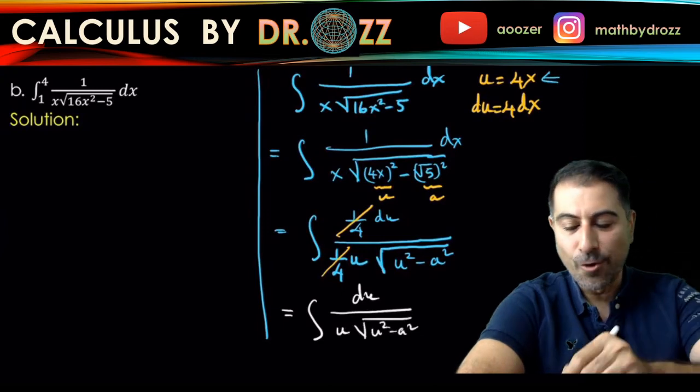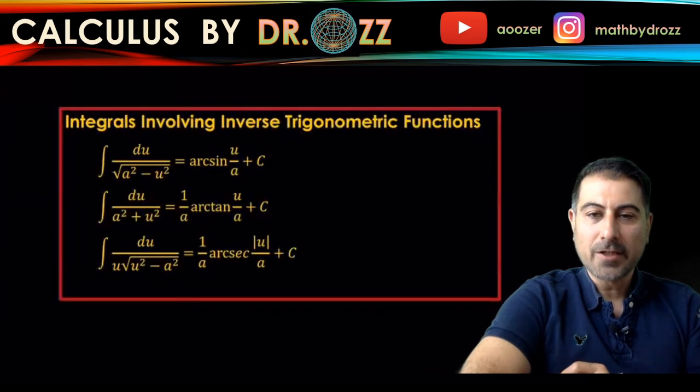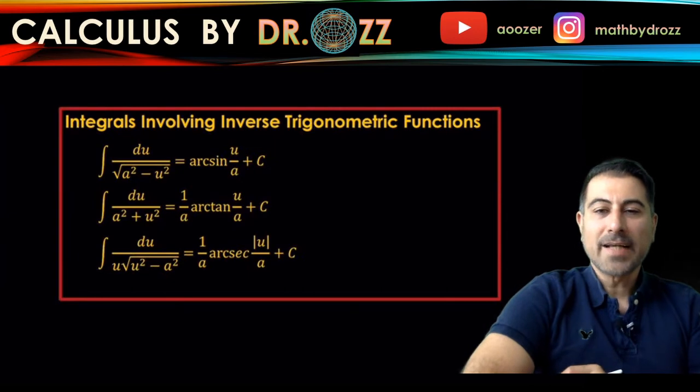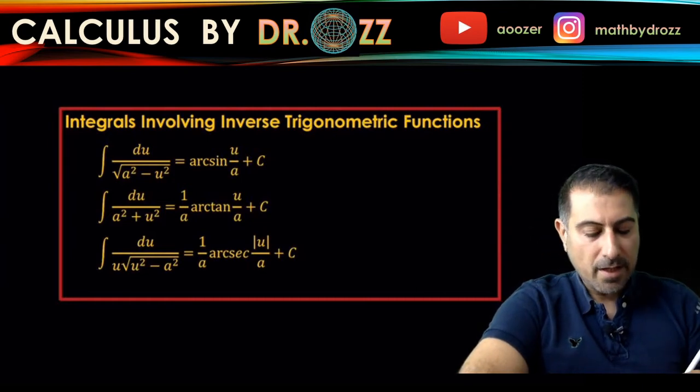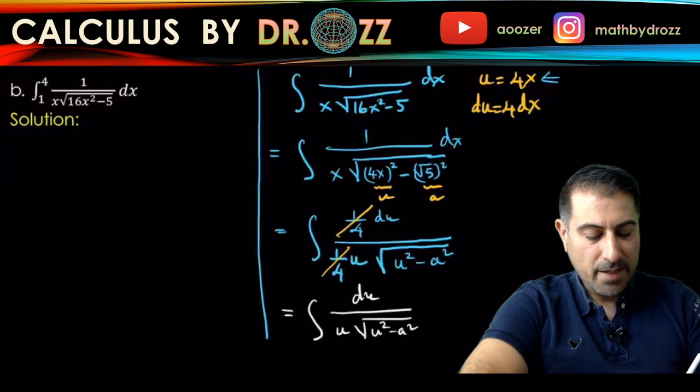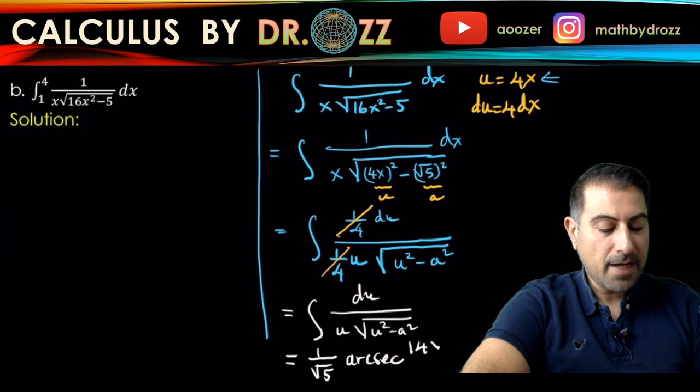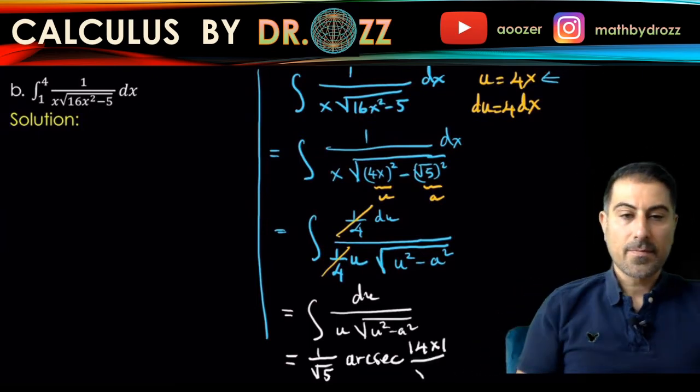With your, you're staring at the last formula. So that's 1/a arc secant absolute value of u/a plus C. Here we go. So let's go back here and write this as 1 over a, so 1 over √5 arc secant absolute value of 4x divided by a which is √5.